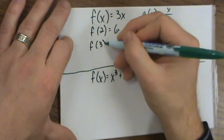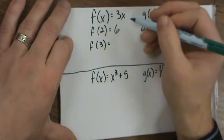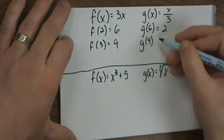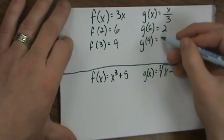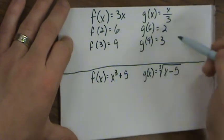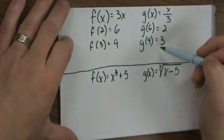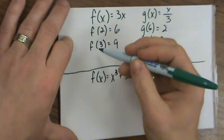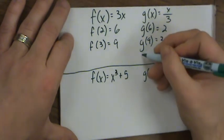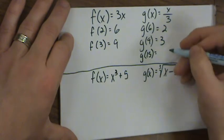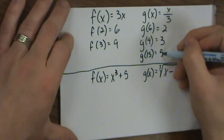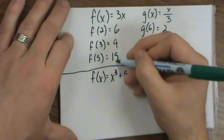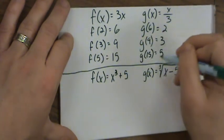Try f of 3: 3 times 3 is 9. Then g of 9 is 9 divided by 3, which is 3. Now go the other direction — g of 15 is 15 divided by 3, which is 5. Then f of 5 is 3 times 5, which is 15. So 15 went into g, 5 came out; 5 went into f, 15 came out. This undoing confirms these are inverse functions.